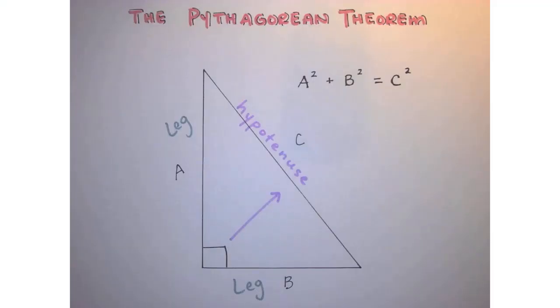The Pythagorean Theorem is named after the mathematician who discovered it. His name was Pythagoras, he was Greek, and he lived in 500 BC.